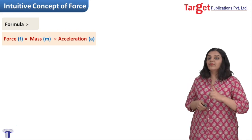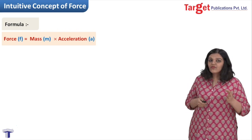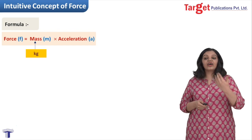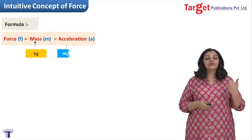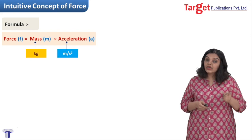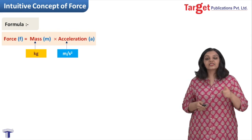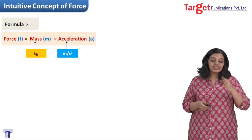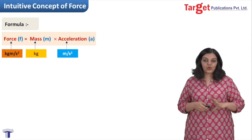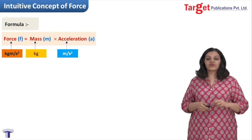Look at the formula and see what is the unit of force. The unit of mass is kg. The unit of acceleration is m per second squared, something we learnt in motion in one dimension. And this makes the unit of force kg meter per second squared. This is the SI unit of force.